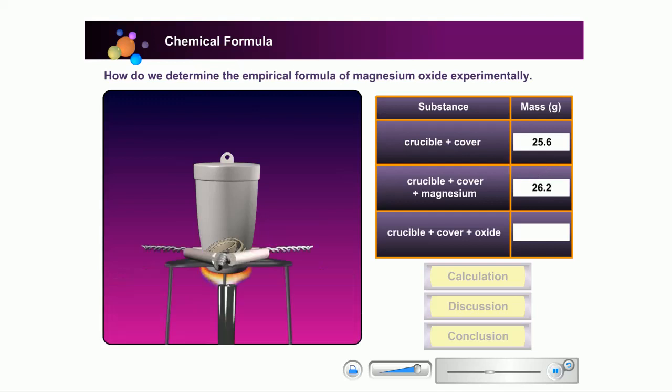Heat the crucible over a strong flame. Lift the crucible cover once in a while to allow oxygen to react with magnesium. Keep the crucible cover close when the magnesium begins to burn. This is to prevent the white fumes of magnesium oxide from escaping.